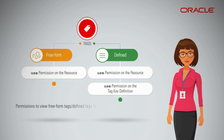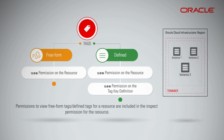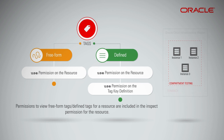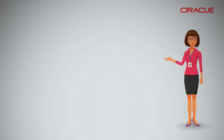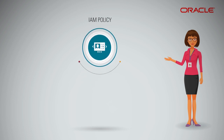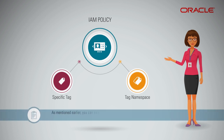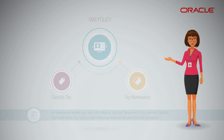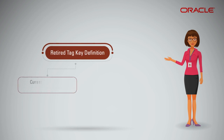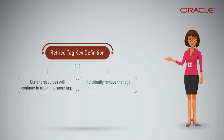Permissions to view freeform or defined tags for a resource are included in the inspect permission for the resource. Users who can view instances in compartment 'testing' can also view any freeform or defined tags applied to those instances. Based on the permission specified by an IAM policy, you can update only that specific tag or tag namespace. You can only retire a tag key definition — if you retire one, the tag key and definition may not be used on new resources. However, existing resources will retain the same tags, and you will have to individually remove the tags from all existing resources.